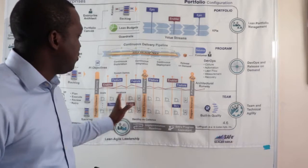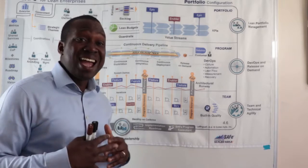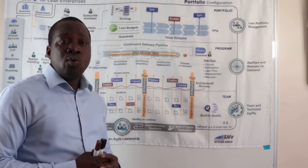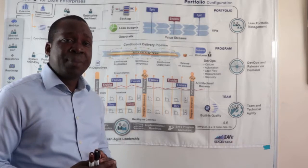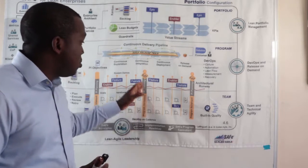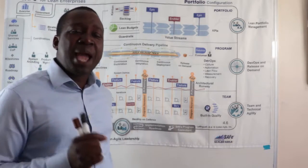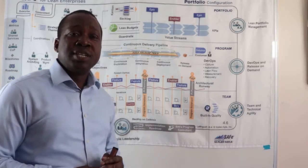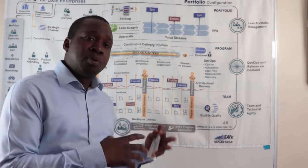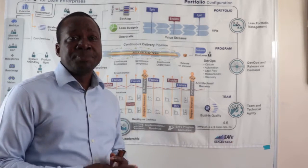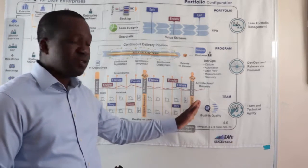At the end of each iteration, we've got a system demo. We're hoping that the teams are able to integrate their work and can demo what they've agreed to work on within that particular iteration. We've got our PI planning event which happens in the innovation and planning iteration. The innovation and planning iteration includes the program increment planning event. Once that is completed, we can go into another set of iterations.